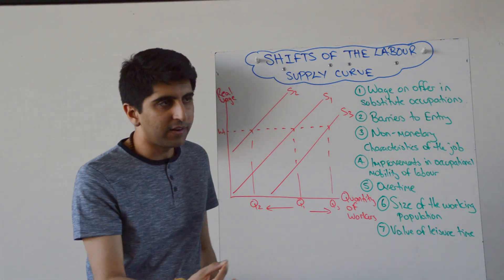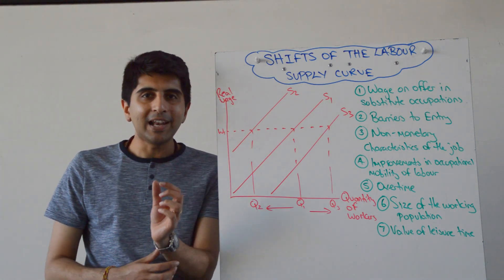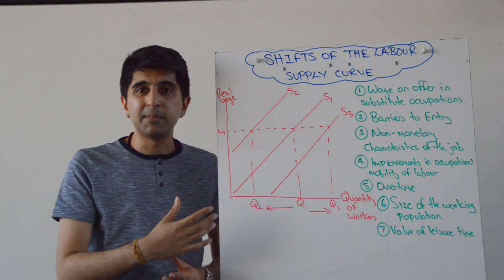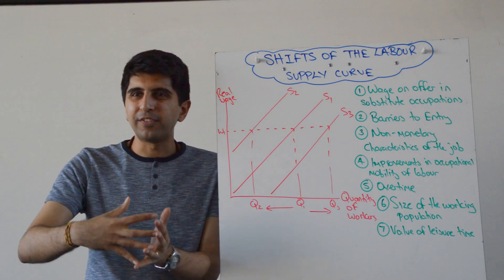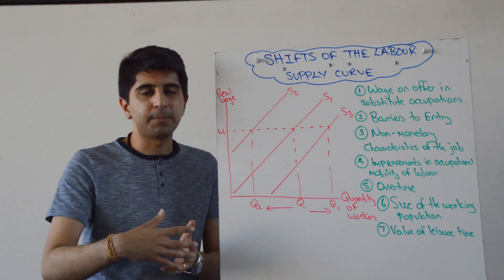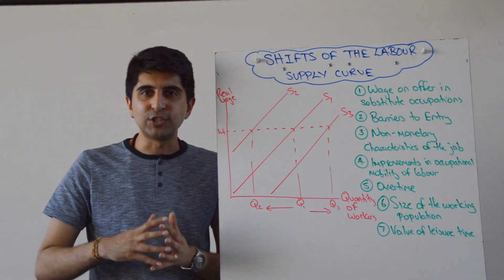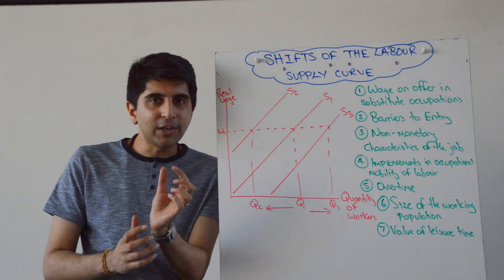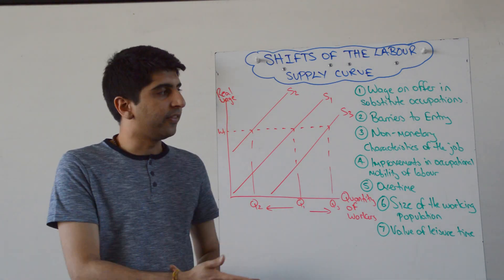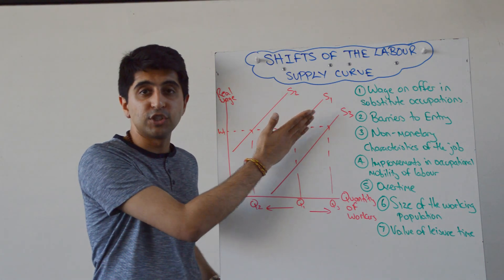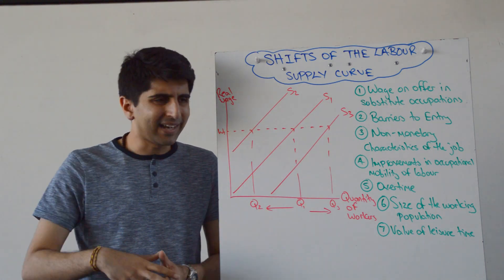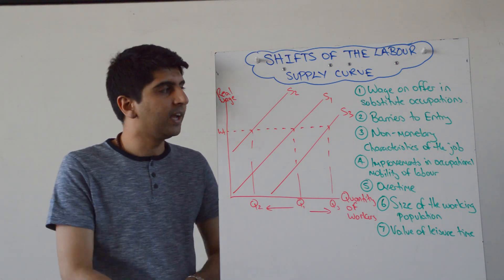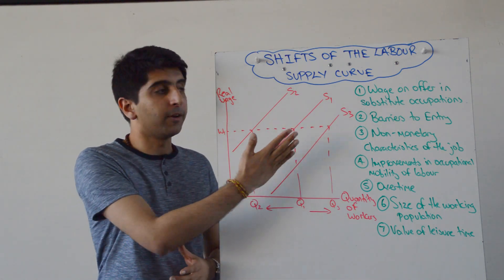Finally, the value of leisure time. If people's value of leisure time increases, the supply of labour will shift to the left — people will think they'd rather spend time with family or enjoying life instead of working long hours. So if the value of leisure time increases, labour supply shifts left. Whereas if people think work is really important and the value of leisure time has decreased, then the supply of labour will shift to the right.